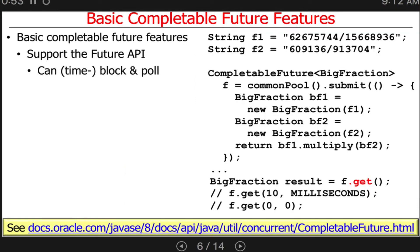Some of the things you can do with the basic future API that is inherited into completable future is you can do time blocks and polls. Here's an example where we might go ahead and create a completable future by submitting to the common fork-join pool a lambda expression that, in this case, is going to multiply two big fractions together. We're going to run that in the background by doing submit. What we can do here is say f.get, and that will block this thread until this computation finishes.